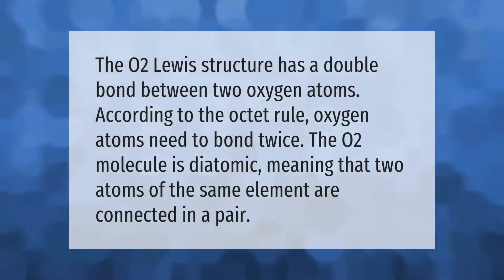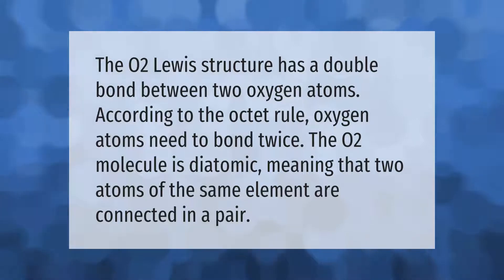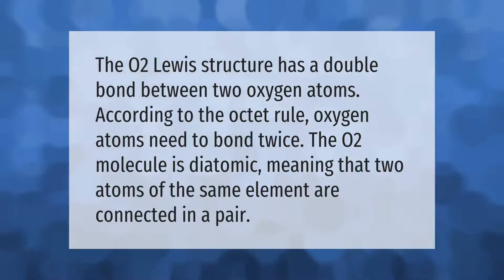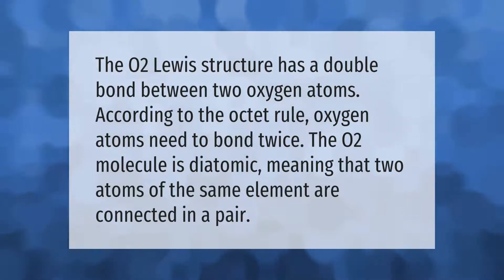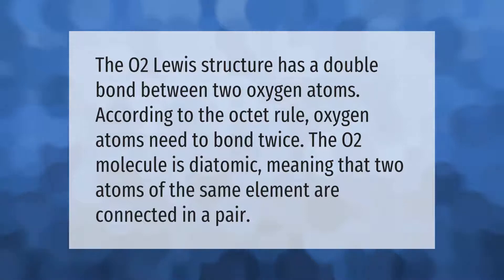The O2 Lewis structure has a double bond between two oxygen atoms. According to the octet rule, oxygen atoms need to bond twice. The O2 molecule is diatomic, meaning that two atoms of the same element are connected in a pair.